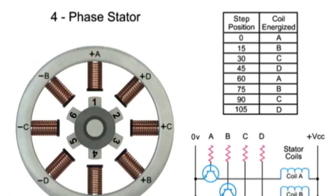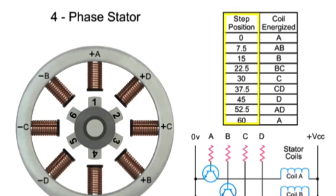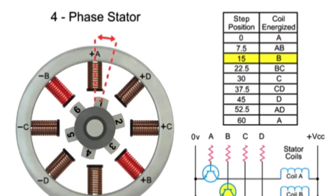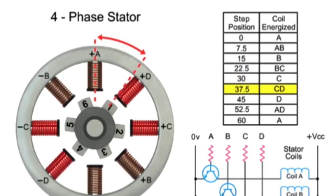For half-step mode, the stepper motor's resolution can be doubled by altering the switching of coils. Half-stepping occurs when one winding is energized and then two windings are energized alternately, causing the rotor to rotate at half the distance. Switching coils in this combination will rotate in the reverse direction.